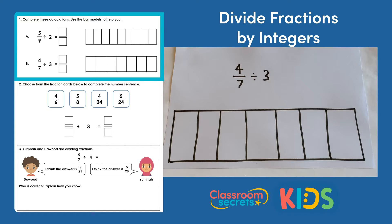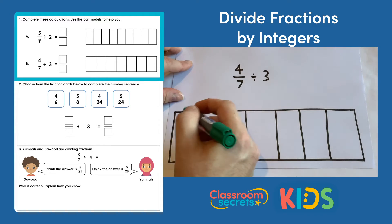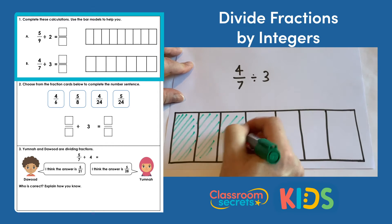B says 4 sevenths divided by 3. So here's our bar model with our sevenths: 1, 2, 3, 4, 5, 6, 7. And we're talking about 4 of those sevenths. So we're just going to shade in 4 of these sevenths here.